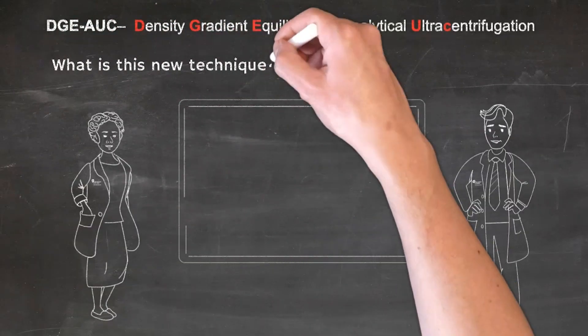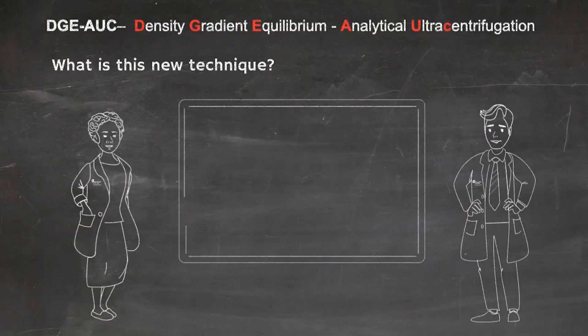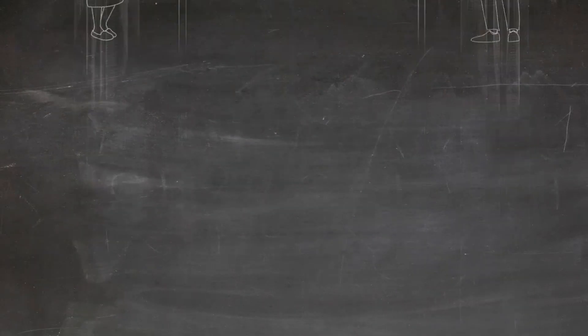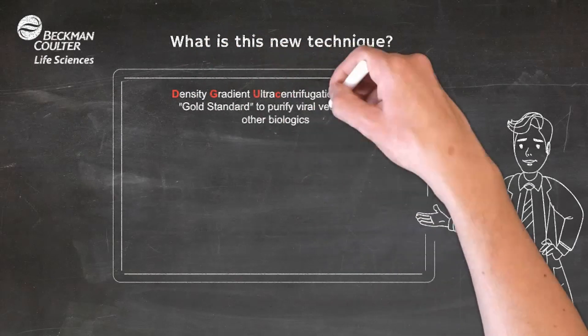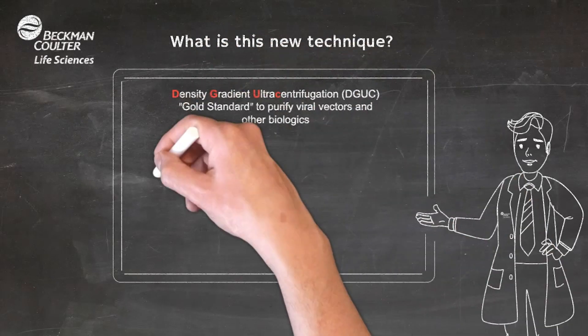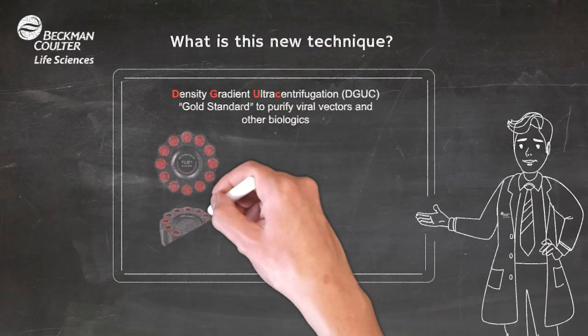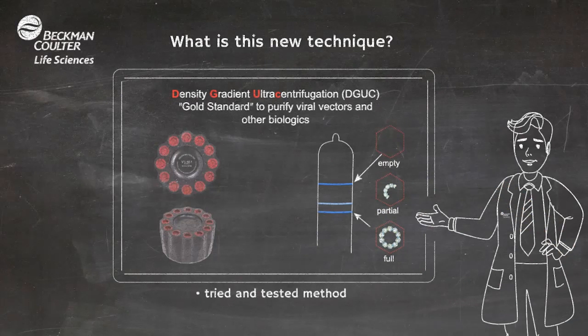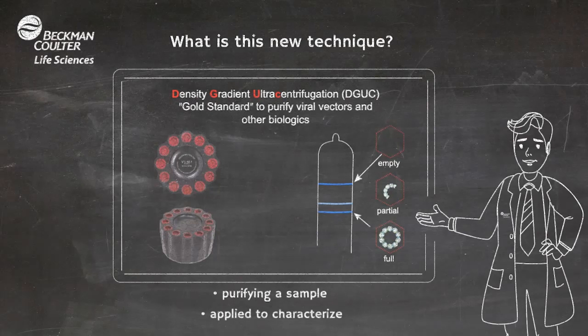Dr. Scan, what is this new technique? Density gradient ultracentrifugation, or DGEAUC, is a tried and tested method to purify viral vectors and other biologics to very high purity. The same principles involved in purifying a sample by DGEAUC can be applied to characterize it.